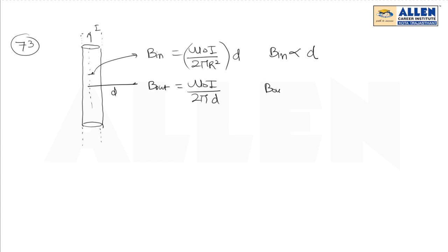So B outside is inversely proportional to d. Now I will draw the graph.